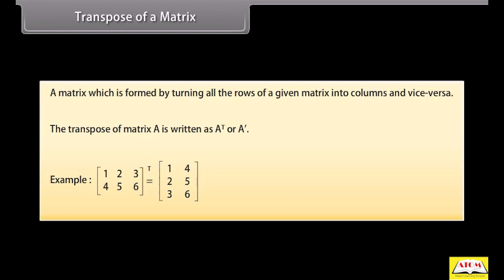and second row 4, 5, 6 is the matrix with first row 1, 4; second row 2, 5; third row 3, 6.